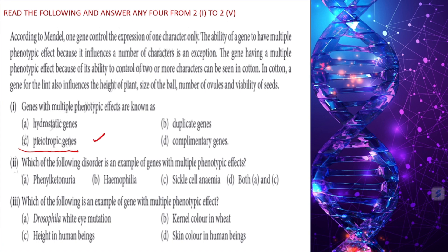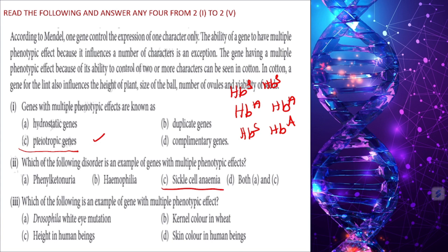Which of the following disorder is an example of a gene with multiple phenotypic effect? In sickle cell anemia, HBA/HBA individuals have normal RBCs, HBA/HBS individuals have different types of RBCs, and HBS/HBS individuals have differently-shaped RBCs. So different phenotypic effects arise from a single gene. Both sickle cell anemia and phenylketonuria are examples — the answer is both A and C.